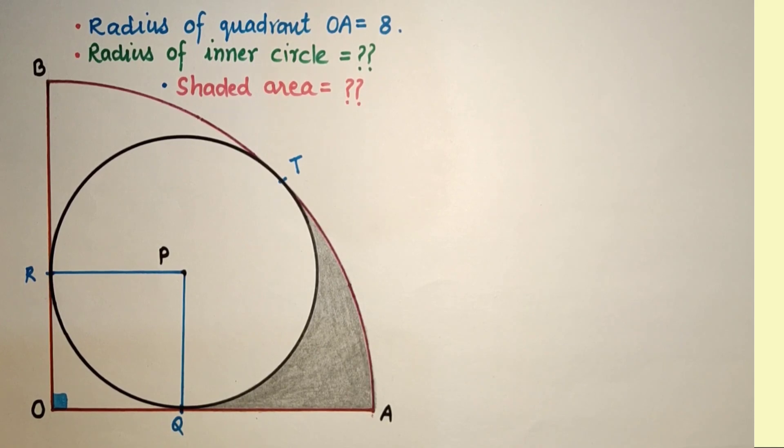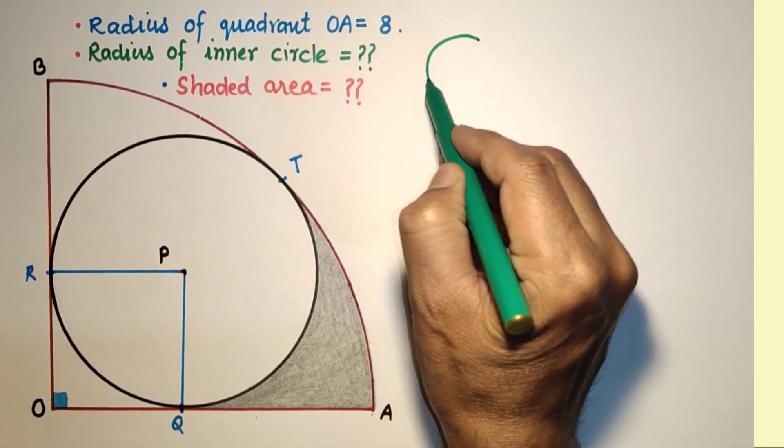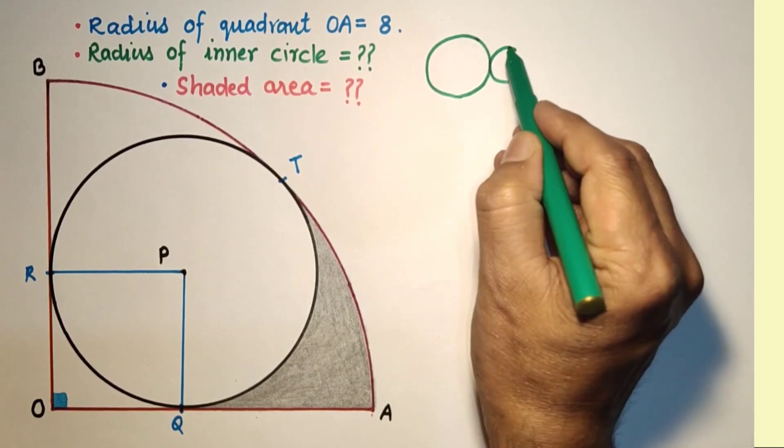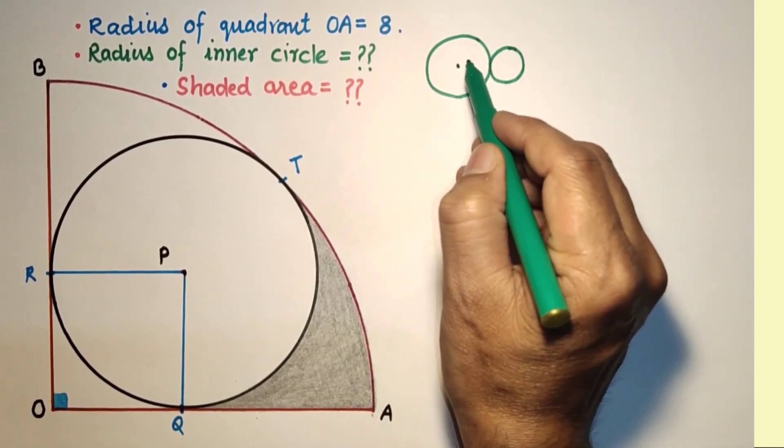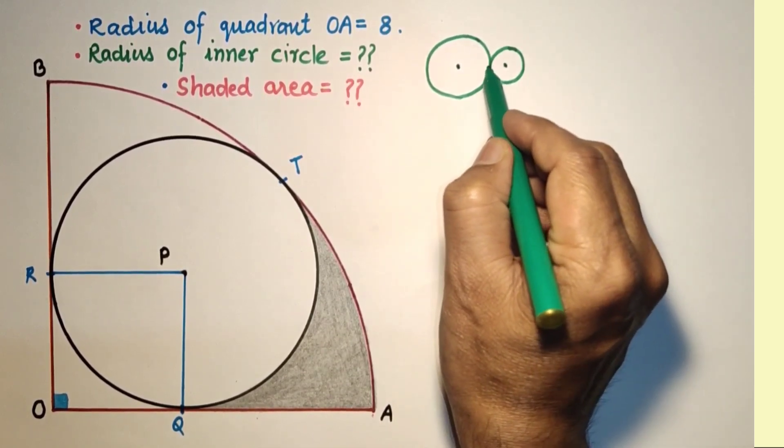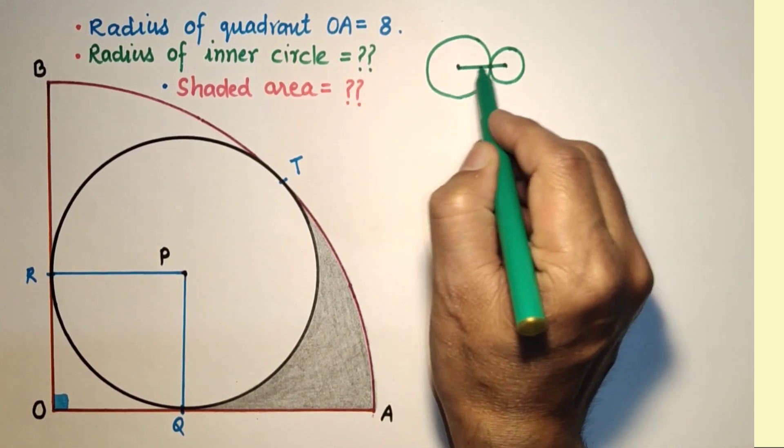Suppose this is a circle and this is another circle. These two circles are touching externally. These are the centers of the two circles, this is the point of contact. So these three points will be collinear.